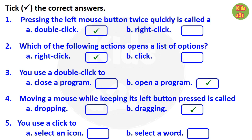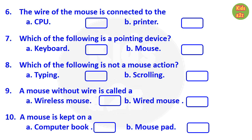Question number five: you use a click to — answer is option A, select an icon. Question number six: the wire of the mouse is connected to the — answer is option A, CPU.